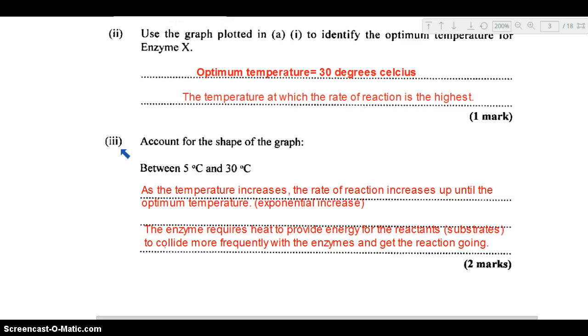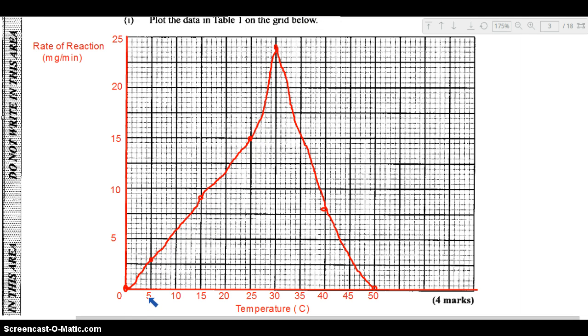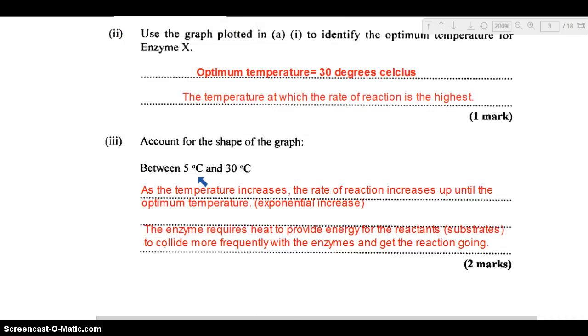Part 3: account for the shape of the graph between 5 degrees Celsius and 30 degrees Celsius. Within this range here, 5 degrees Celsius right up to 30 degrees Celsius which was the optimum, you can see there is a general increase in the rate of reaction as the temperature is being increased right up to the optimum temperature. As the temperature increases, the rate of reaction increases up until the optimum temperature. That is pretty much an exponential increase, gradually increasing as temperature increases.